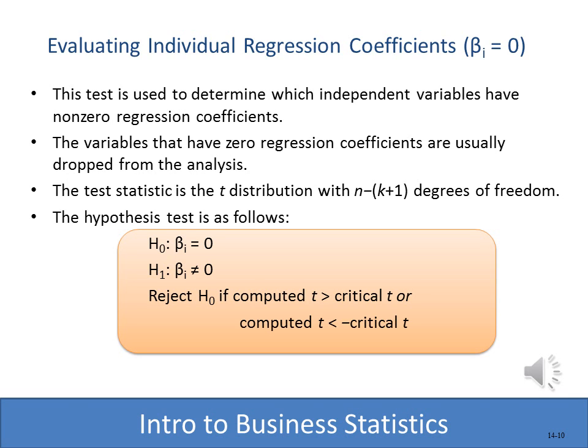The F-test told us that at least one of the independent variables is a significant predictor of the dependent variable. Our next step is to decide which one. To do that, we're going to evaluate the slope of each independent variable using a t-test.